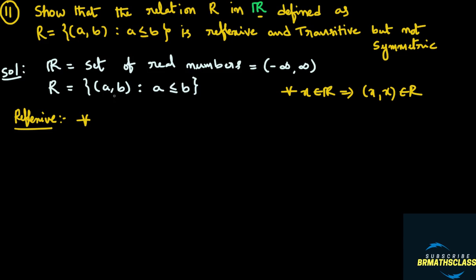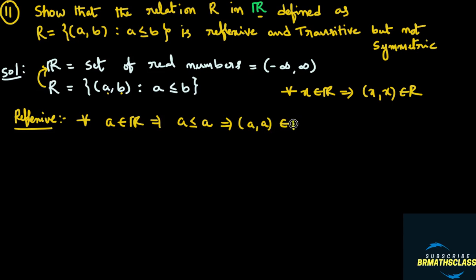The relation is defined on ordered pairs (A, B) where A and B are real numbers. Take any real number A. Check: is A less than or equal to A? Is A less than A? No. Is A equal to A? Yes — the equality condition is satisfied. So the ordered pair (A, A) is in the relation. For any A belonging to the real numbers, the ordered pair (A, A) belongs to R, so the relation R is reflexive.